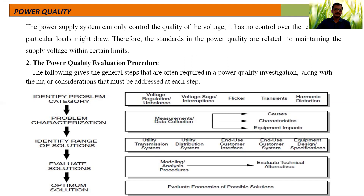The power quality evaluation procedure gives the general steps required in a power quality investigation along with major considerations at each step. It has five steps. In the first step, we identify the problem category — whether it comes under voltage regulation or unbalance, voltage sags or interruptions, flicker, transients, or harmonic distortion. In the second step, problem characterization: we get data from measurements or data collection to find the causes, characteristics, and equipment impacts of the problem.